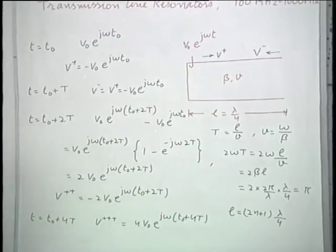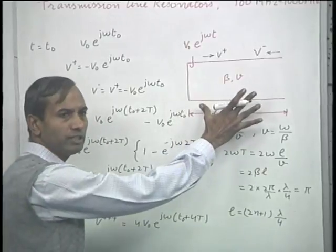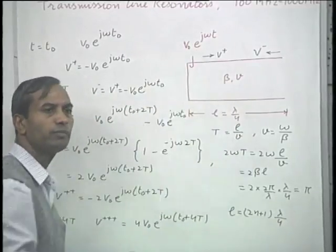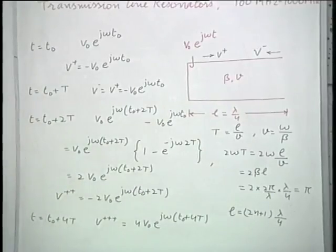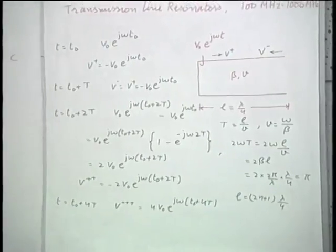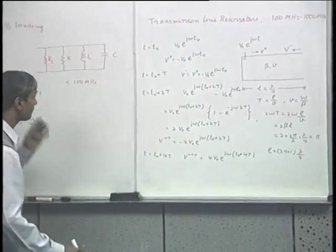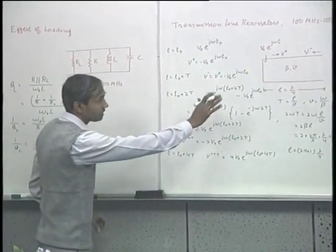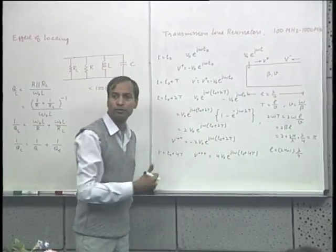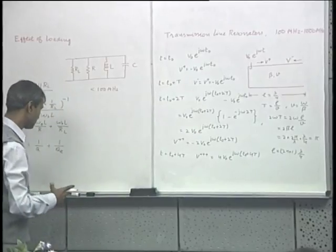The voltage continues to rise until the losses in the transmission line — conductor loss and dielectric loss — match the power fed by the probe to the resonant circuit. A voltage step-up of several hundred volts is possible for a good low-loss resonant section. Having seen that such a section can act as a resonator, let us now work out the other properties — for example, the input impedance and how it behaves as a function of frequency.